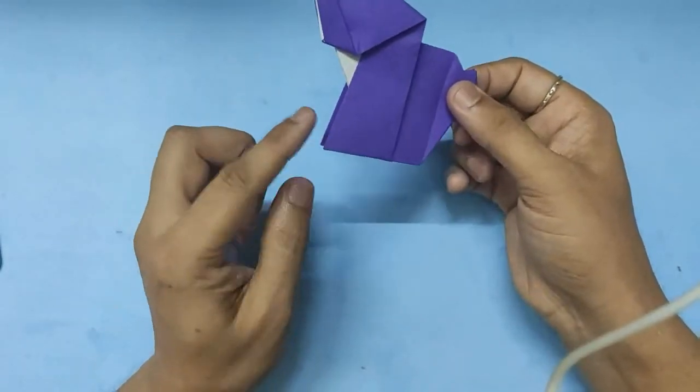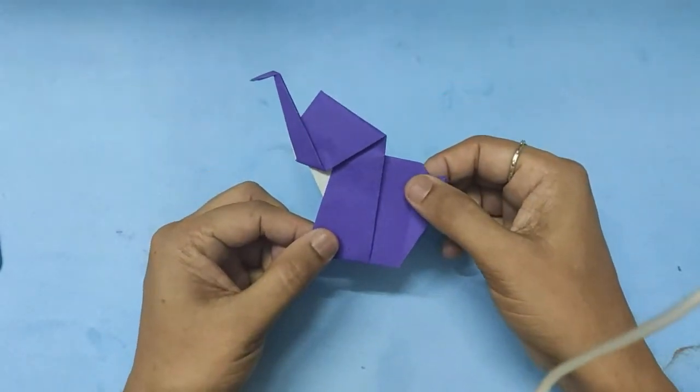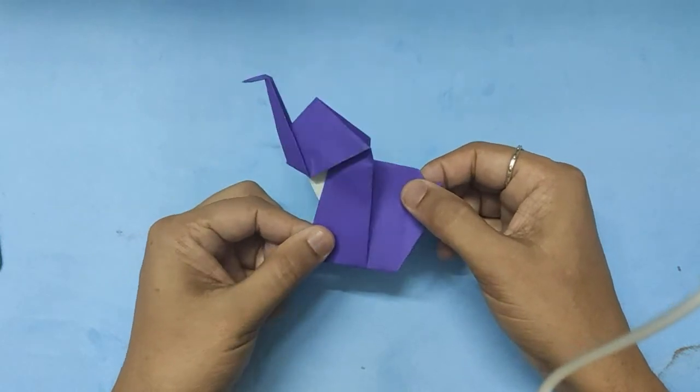So that is the elephant. You can hold this part there and the back you can pull it and you will see the elephant trumpeting.